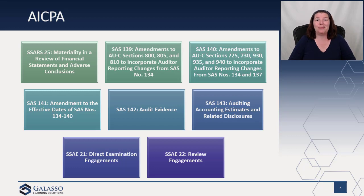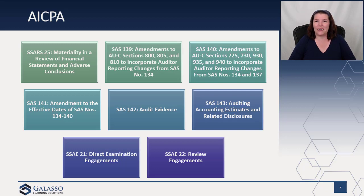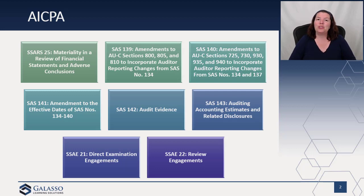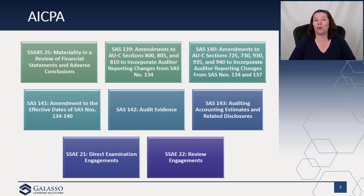SAS 134 through 140 are intended to be adopted together — they're designed as a suite of standards. You really can't adopt 134 without adopting 138, and you can't adopt 136 without adopting 138. SAS 141 delays the effective date. SAS 134 through 140 were to be effective for financial statement audits after December 15, 2020. However, due to COVID and the stress on clients facing difficult economic issues, as well as on firms helping with PPP loans, forgiveness, and other grants, they delay the standards by one year, deferring them to December of 2021.